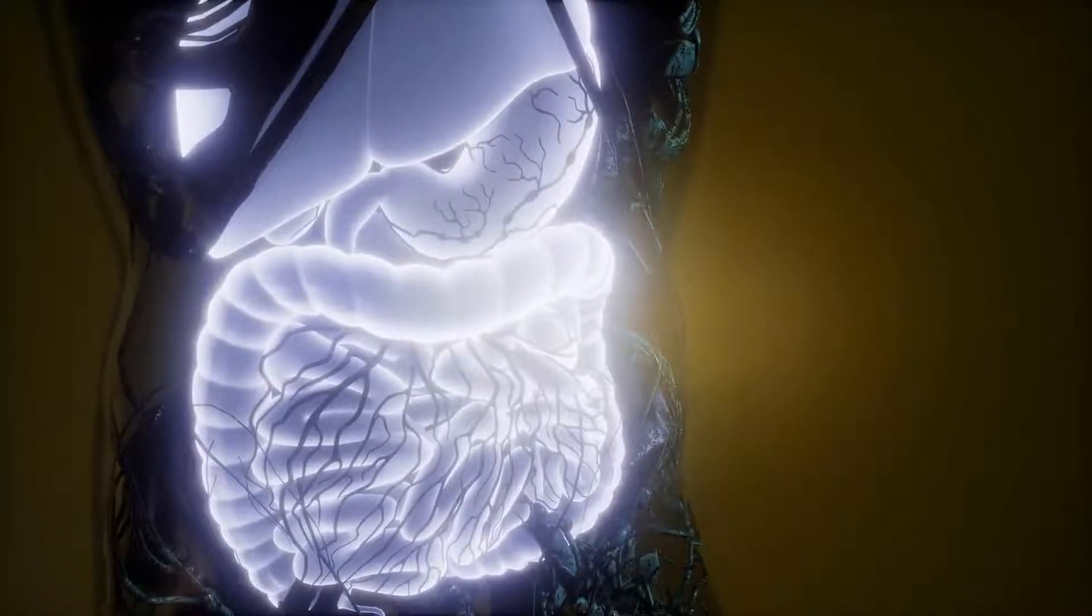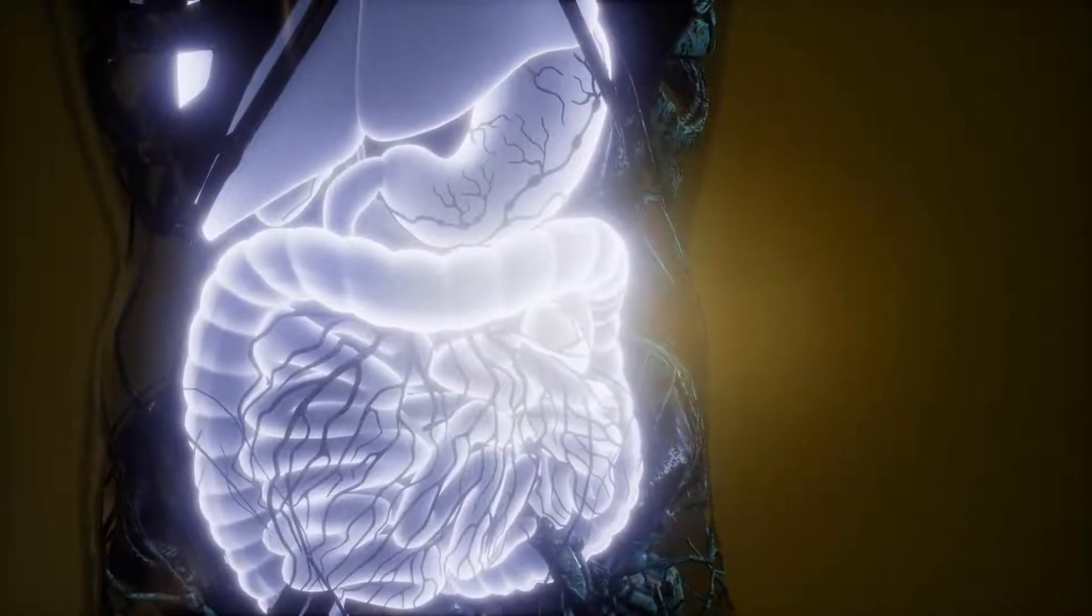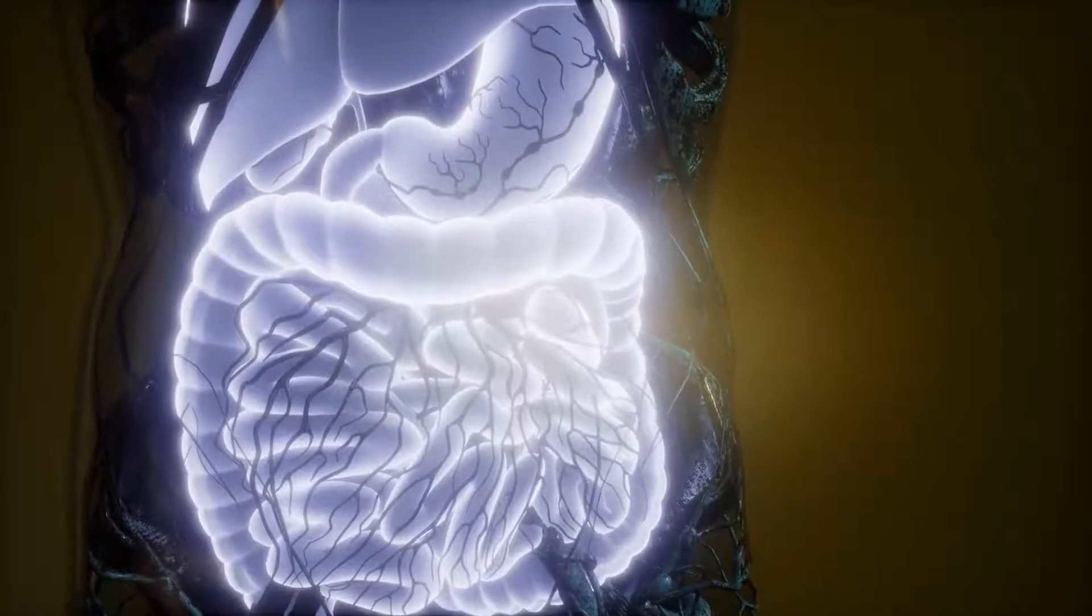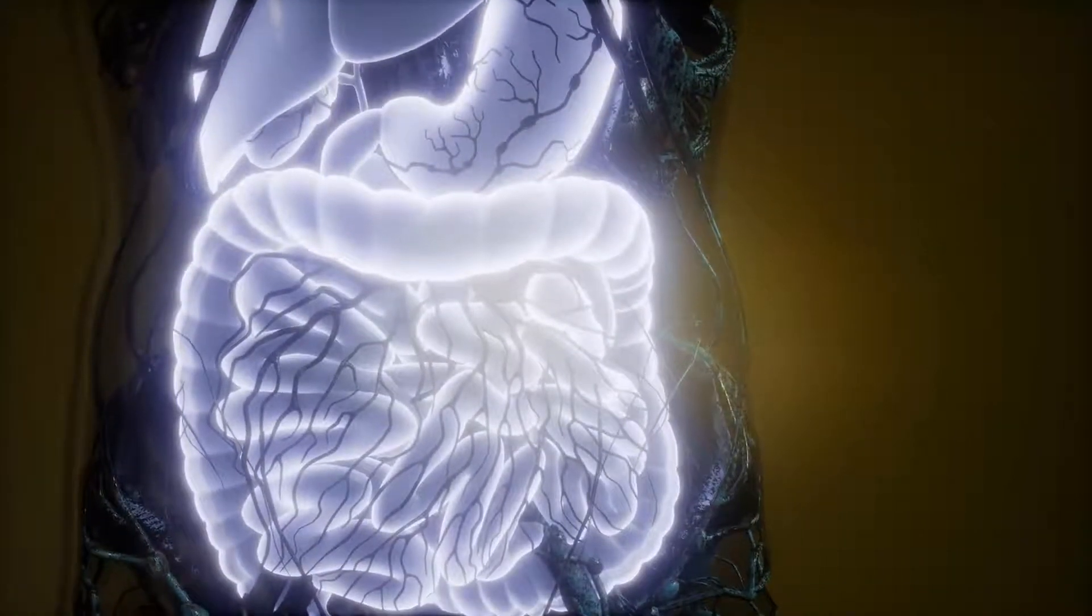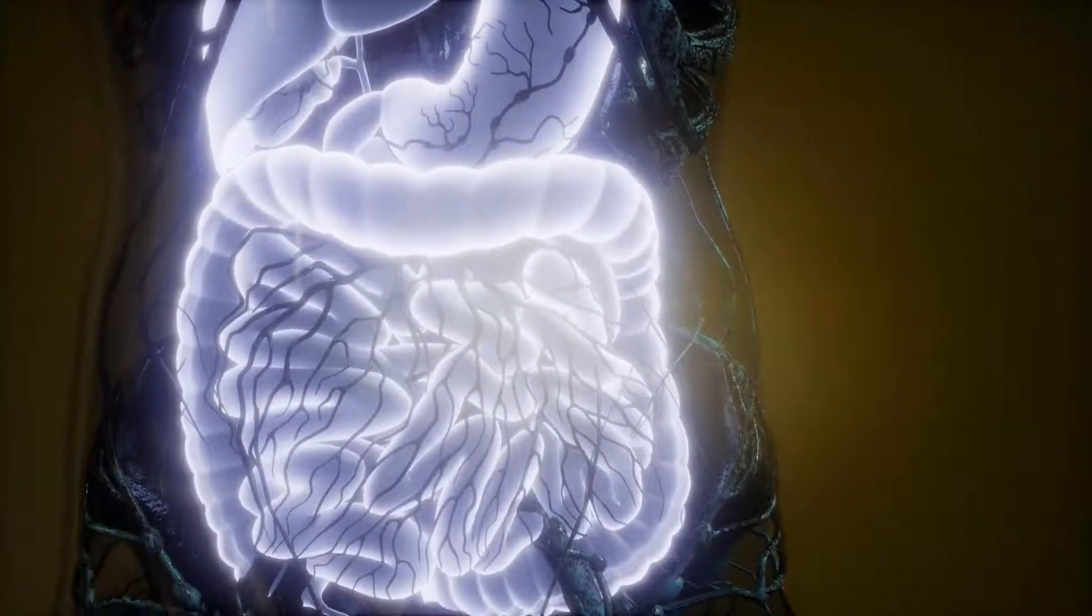The kidneys belong to the urinary tract, and the abdominal cavity also hosts the liver, gallbladder, spleen, and pancreas, along with the vermiform appendix, a vestigial organ.